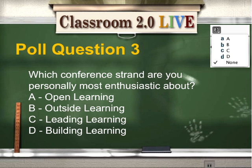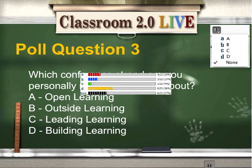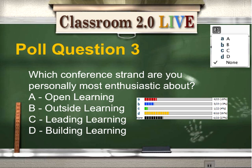Which conference strand are you personally most enthusiastic about? A: open learning, B: outside learning, C: leading learning, or D: building learning. There's no option for 'all' — you'd have to put that in the chat. Results: 36% for building learning, 18% for open learning, 13% for outside learning, 4% for leading learning, and 27 didn't vote.